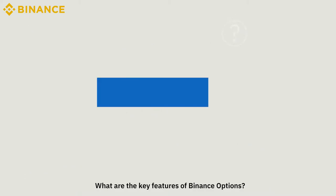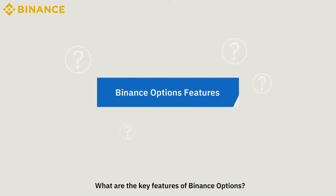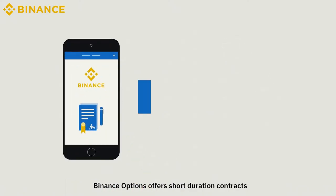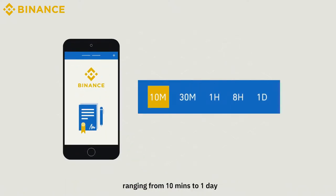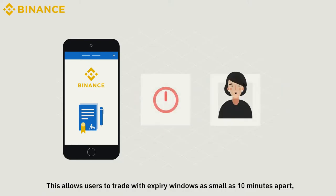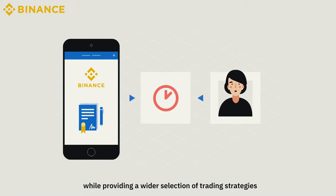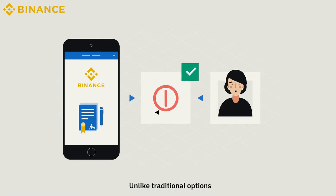What are the key features of Binance Options? Binance Options offers short-duration contracts ranging from 10 minutes to one day. This allows users to trade with expiry windows as small as 10 minutes apart, while providing a wider selection of trading strategies.